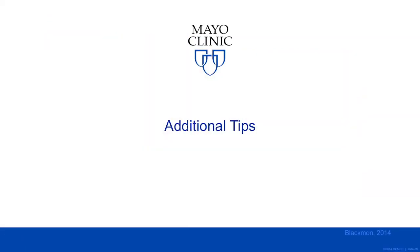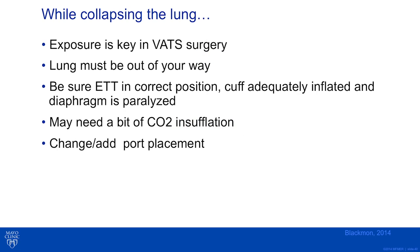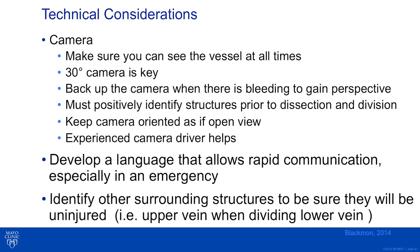Additional tips: while collapsing the lung, exposure is key in VATS surgery — the lung must be out of the way. Ensure the endotracheal tube is in correct position and be willing to assist anesthesia with troubleshooting. Make sure your cuff is adequately inflated and the diaphragm is paralyzed during ventilation. CO2 insufflation may help the lung collapse rapidly. Always be willing to change or add port placement when angles are incorrect. Make sure your camera allows you to see the vessels at all times. Do not dissect blindly. A 30-degree camera is key to having the best angles unless using a robotic approach.